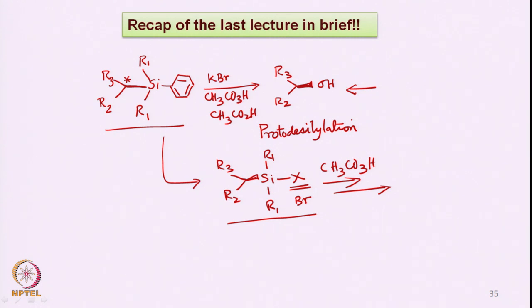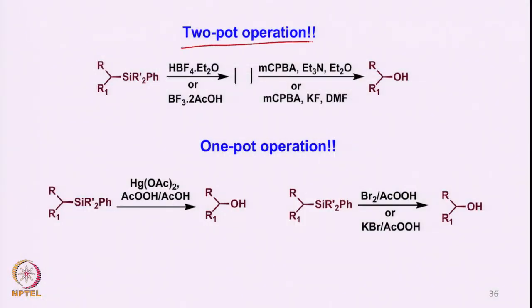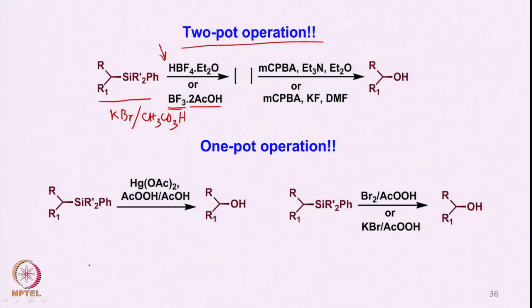We will now see how this two-step process can also be done in a slightly different way and how modifications have been done to get a one-step or one-pot operation. This two-pot operation used potassium bromide and peracetic acid, but one can also use somewhat different reagent systems such as HBF₄ (fluoroboric acid) or BF₃ etherate and acetic acid combination. These act as a source of proton as well as F⁻ as a nucleophile.